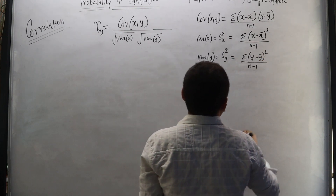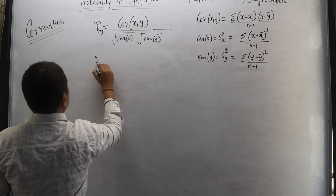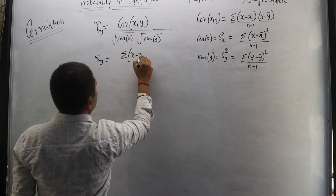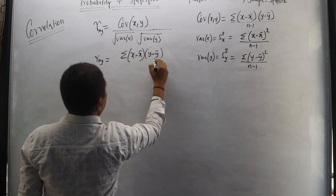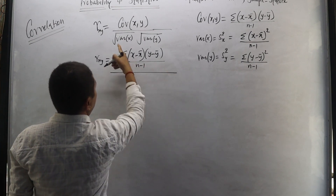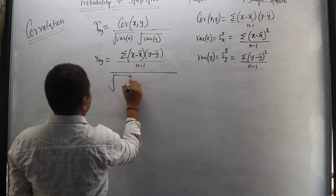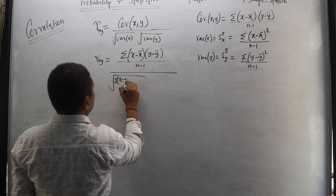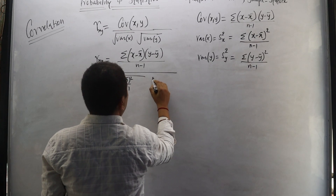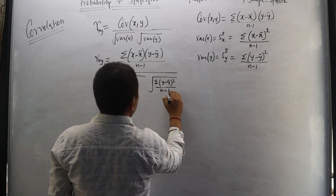Now let us substitute these values. The correlation between x and y equals summation of (x − x̄)(y − ȳ) divided by (n − 1), and then divided by the square root of summation of (x − x̄)² divided by (n − 1), and the square root of summation of (y − ȳ)² divided by (n − 1).